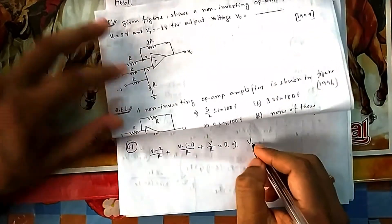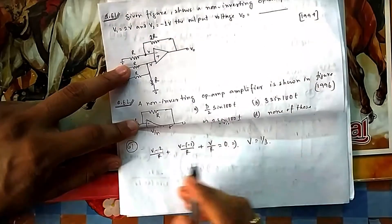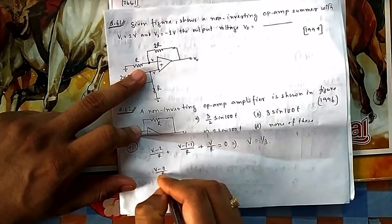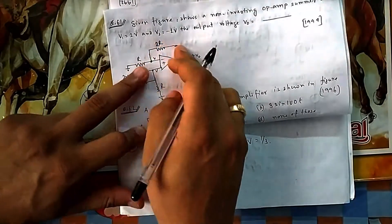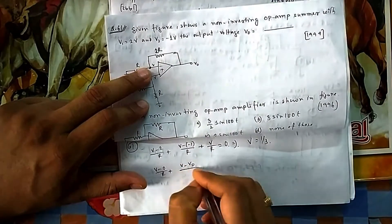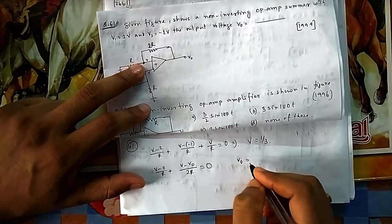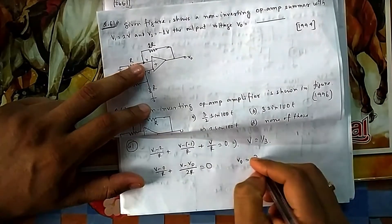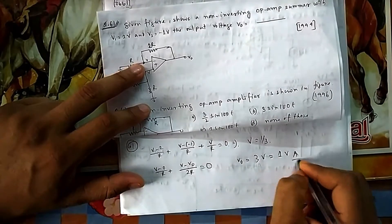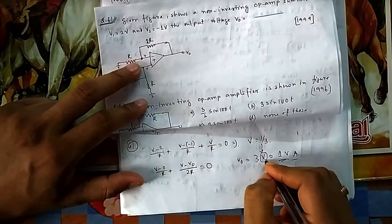Taking nodal at V+, with outgoing currents: (V − V2)/R + (V − V1)/R + V/R = 0. Solving, R cancels and we get V = (V1 + V2)/3, which equals 1/3 in this case.